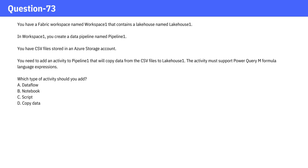In Workspace 1, you create a data pipeline named Pipeline 1. You have CSV files stored in an Azure storage account. You need to add an activity to Pipeline 1 that will copy data from the CSV files to Lakehouse 1. The activity must support Power Query M formula language expressions.